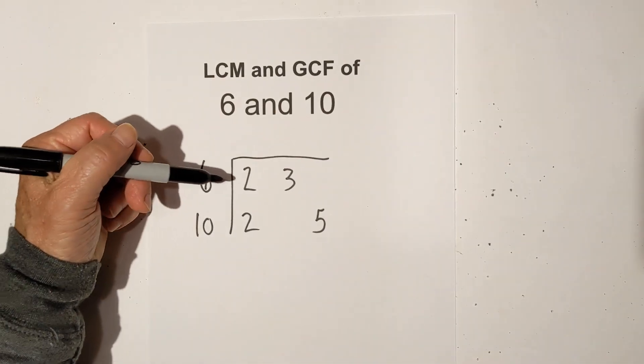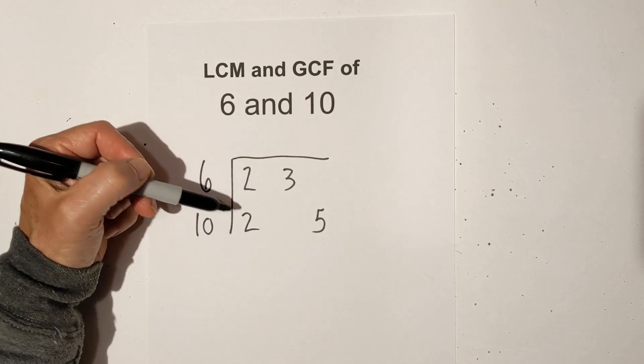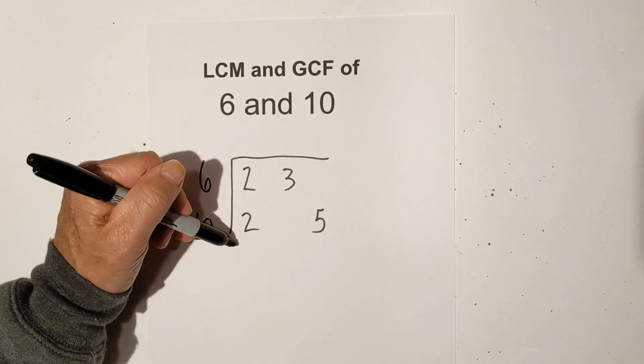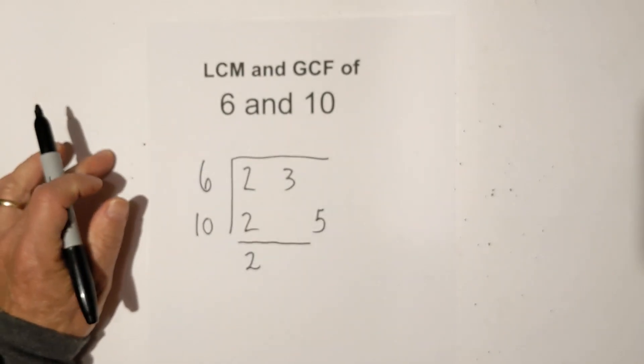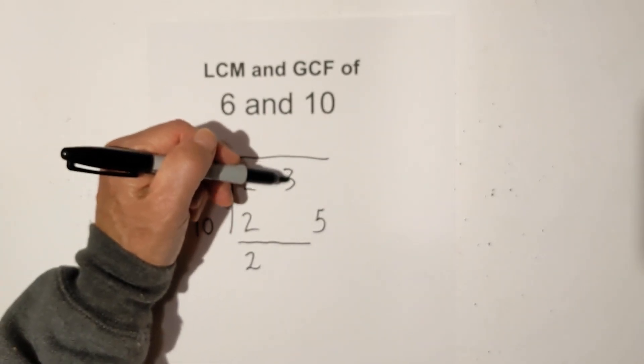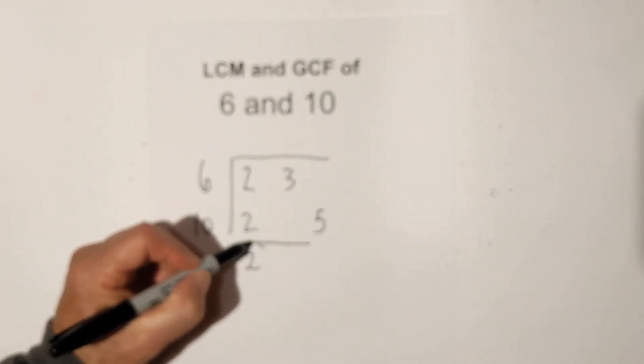So now the rule for the GCF is you only bring down numbers if you have pairs of numbers. So we have a pair of 2s because we only have two numbers a 6 and a 10 and then there's not two 3s and there's not two 5s. So the GCF is 2.